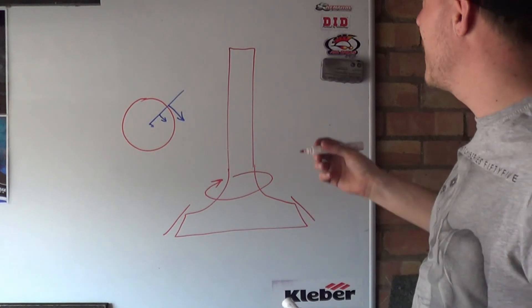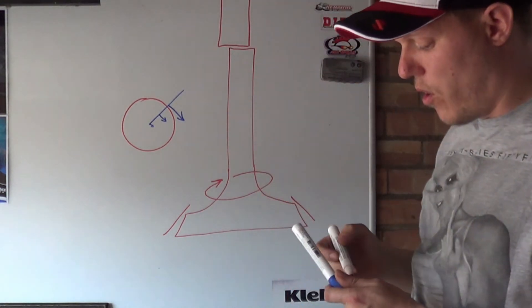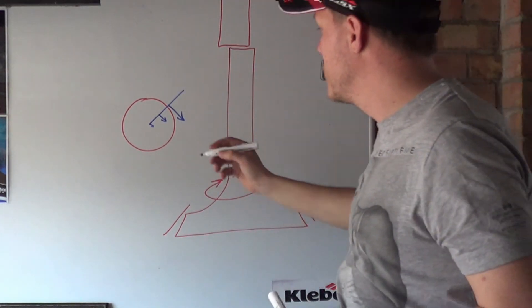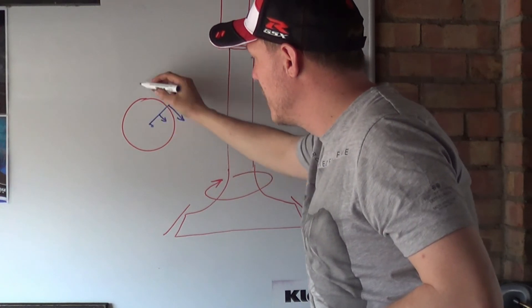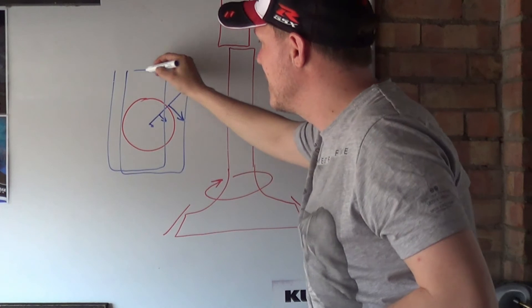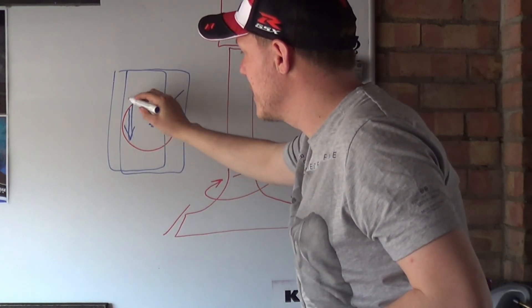And what we do is we have our camshaft so our cam lobe comes down. But what we do is we offset the centre of this cam lobe. So the centre of pressure for the cam lobe, the cam doesn't sit in the middle, the cam sits to one side. And basically we're pushing the valve like this, in this direction.